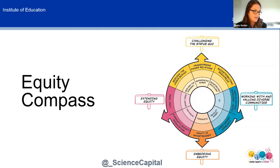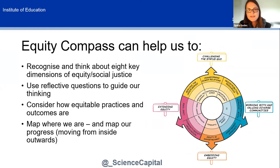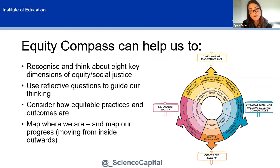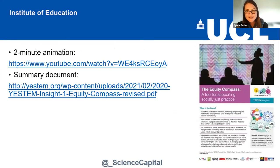The Equity Compass can be helpful for recognizing and thinking about different dimensions of equity, using reflective questions to guide thinking and considering how equitable practices and outcomes are. You can draw a spider diagram and think about which areas you want to develop further and which areas you're already doing well with. It's useful for mapping where you are and mapping your progress. I'll put links in the chat to a short animation and an insight piece that explains more and gives guiding questions about how to use this tool.